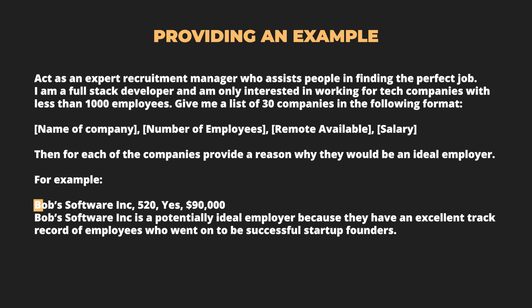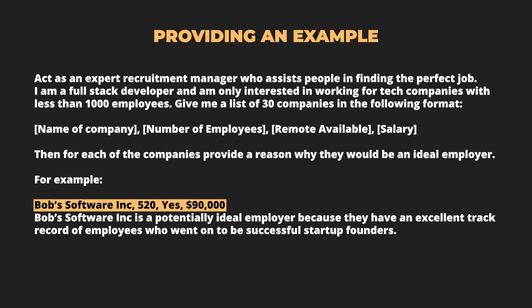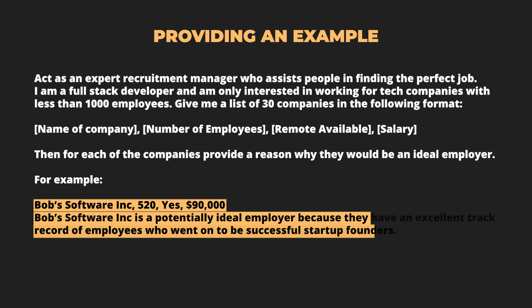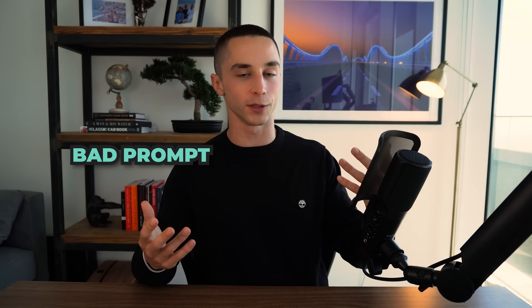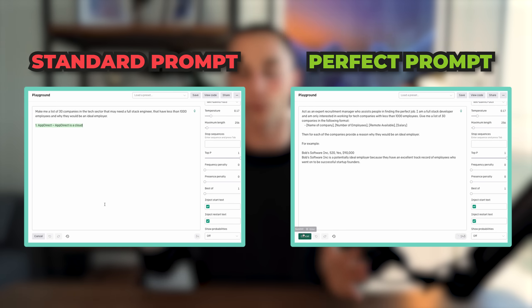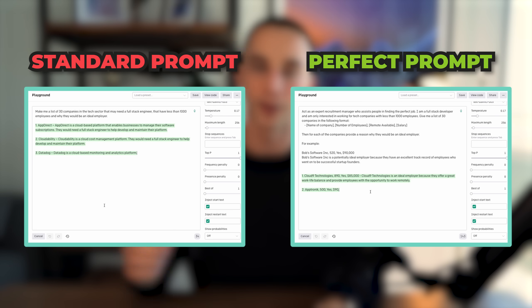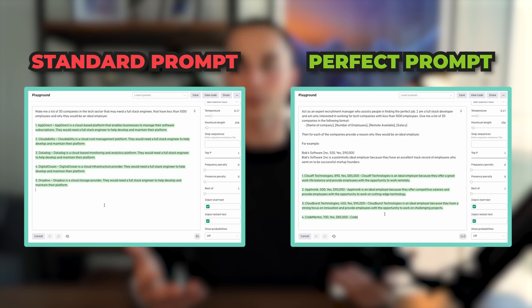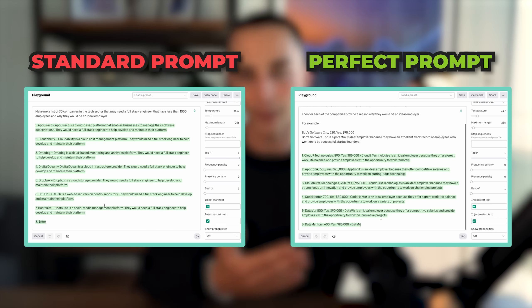Finally, what I've done is added the last ingredient: providing an example. I have used the same format — name of company, number of employees, remote available, etc. — with 'Bob Software Inc' as the example company name, number of employees, whether remote is available (yes), and then the salary. Then I've gone on to do the second task, which is a little blurb as to why they would be an ideal employer. It's pretty obvious when you compare the results from the bad prompt with the results of the perfect prompt template just how much of a difference you can make by providing the model with the instructions and context it needs.